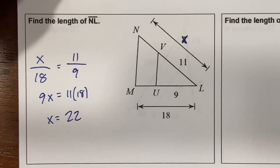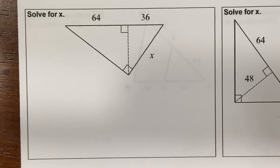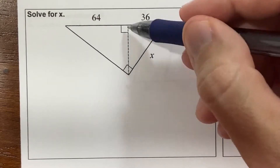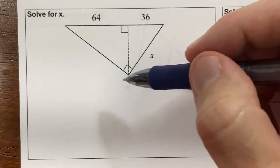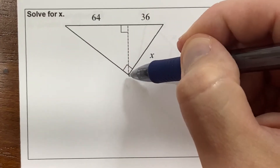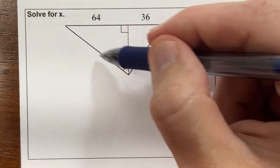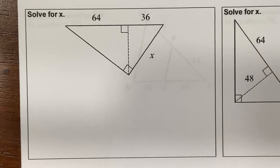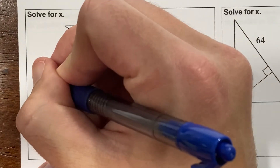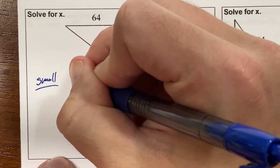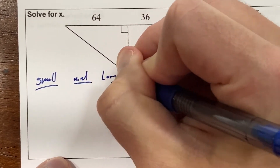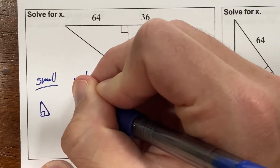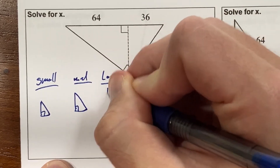The next style of problem involves triangles within a triangle. I have a right triangle, and an altitude was drawn down to the hypotenuse. That creates a large triangle on the outside, a medium-sized triangle on one side, and a small triangle on the other side — three different triangles. I'm going to draw these out separately: small, medium, and large.